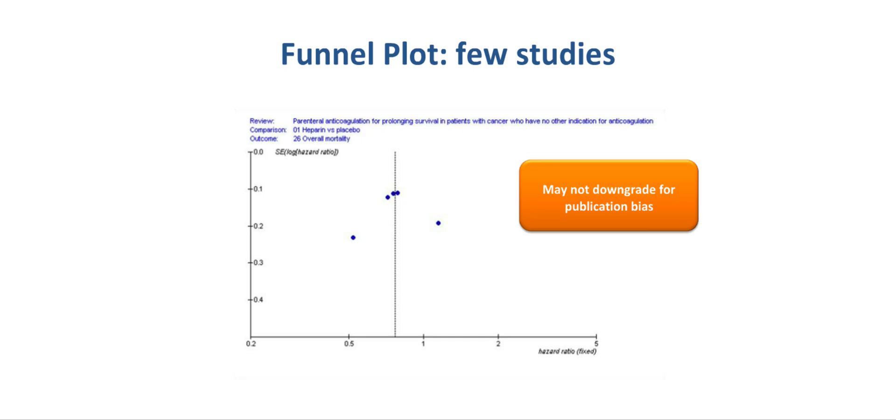Consider this example. There frequently is a question how many studies are required to assess publication bias in the funnel plot. Rules of thumb indicate that a minimum of 5 to 10 studies is required. This example, an early version of a Cochrane systematic review looking at parenteral anticoagulation for prolonging survival in patients with cancer who had no other indication for anticoagulation, shows five randomized controlled trials that appear to be symmetrically distributed around the best estimate of effect, which is a hazard ratio of approximately 0.8. Despite the positive studies, one might describe publication bias as undetected and not downgrade the quality of evidence.